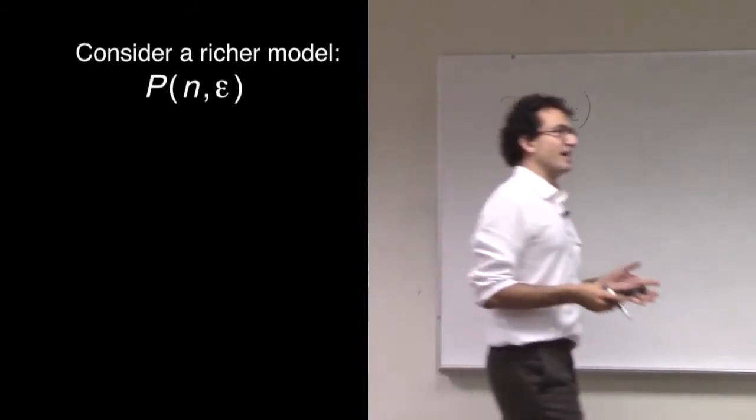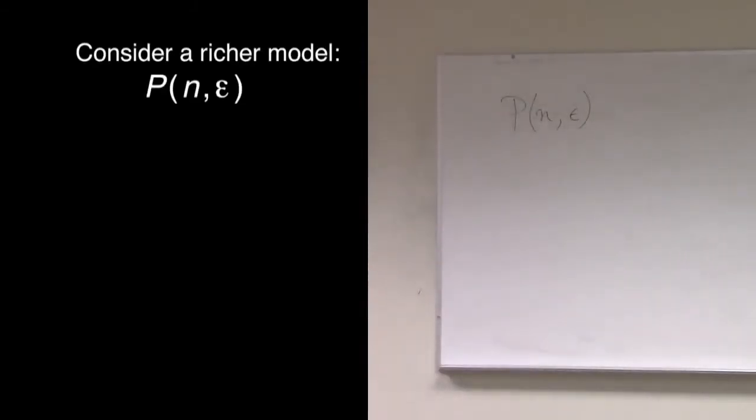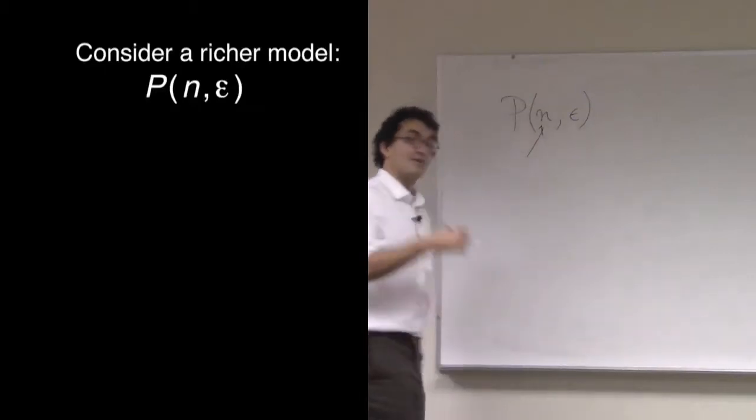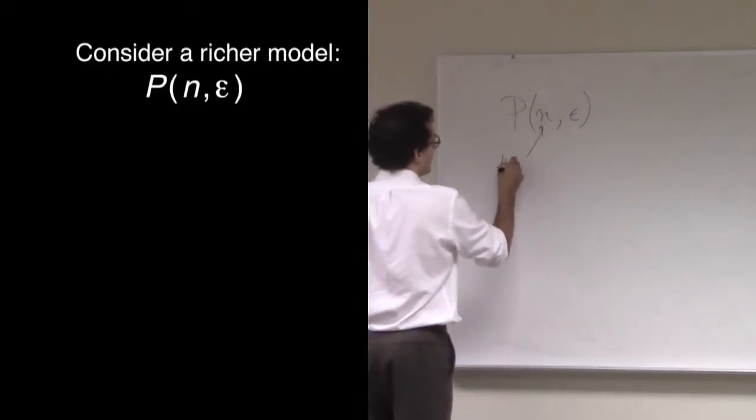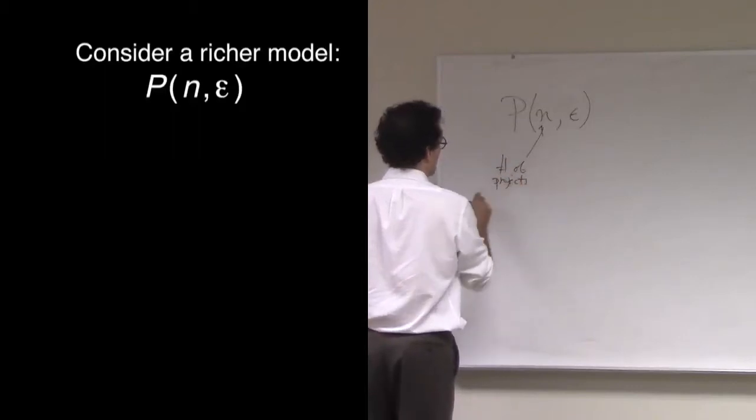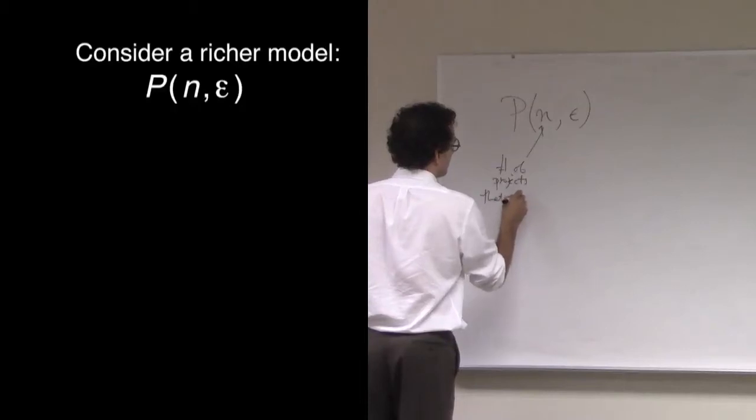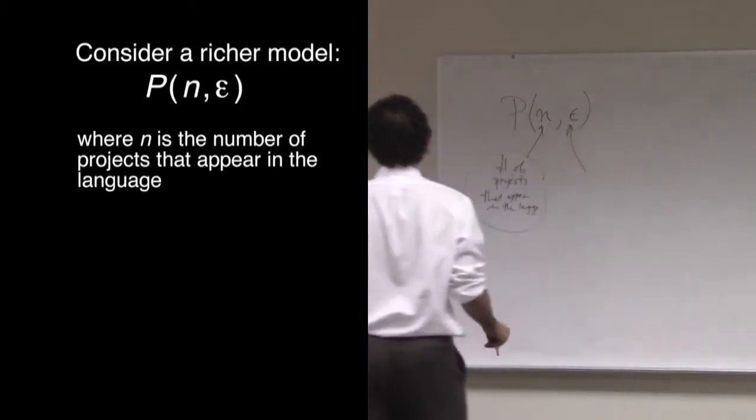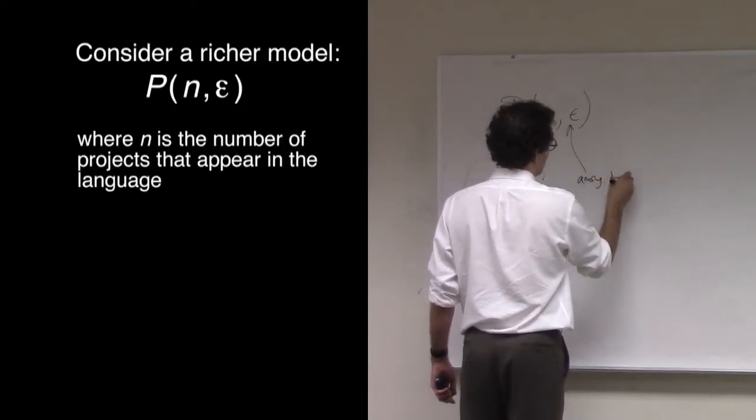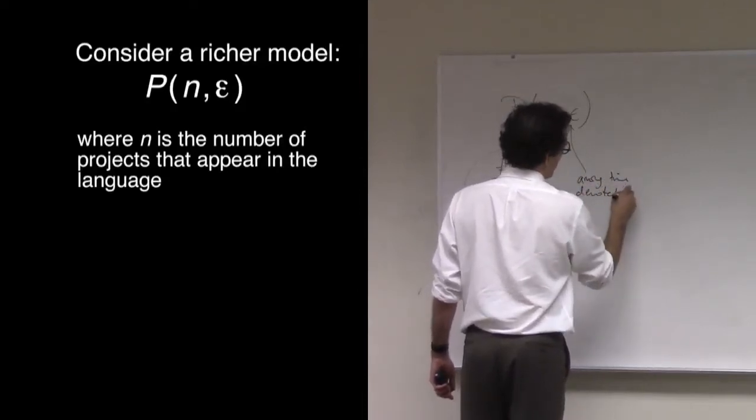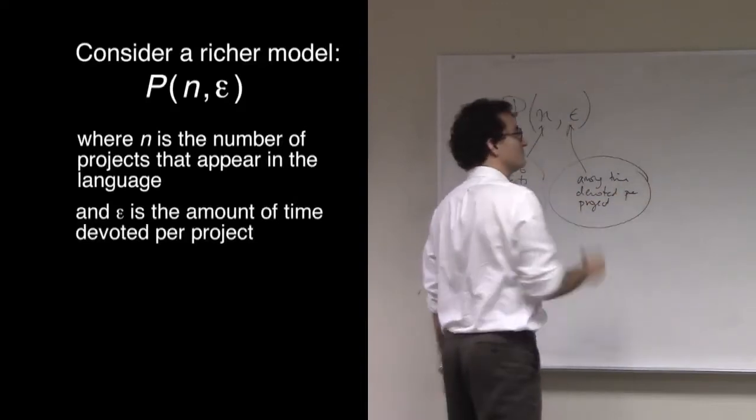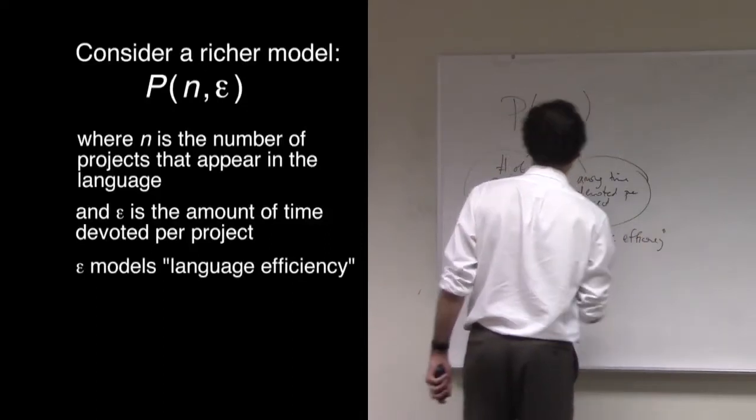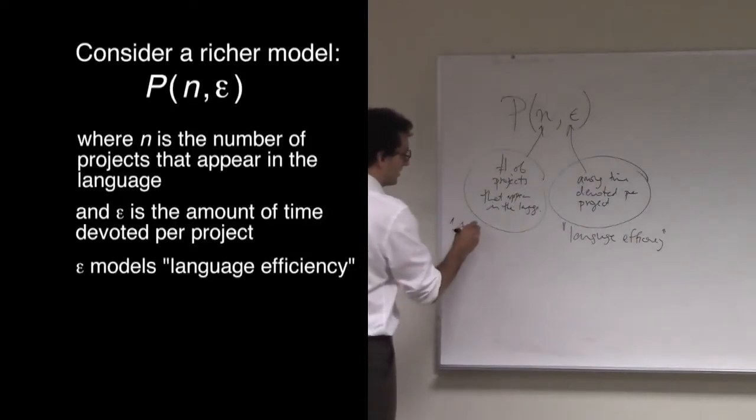This distribution is now going to try to explain not only the popularity of languages but also the amount of time devoted to them, the amount of programmer time devoted. n here is, as before, the number of projects that appear in the language. And this here, epsilon, is the amount of time devoted per project. You should think of epsilon as modeling some kind of language efficiency, and n is modeling language popularity.